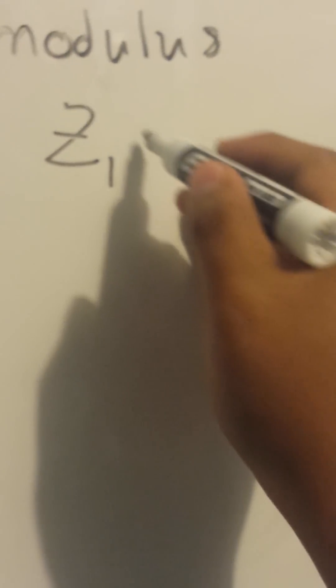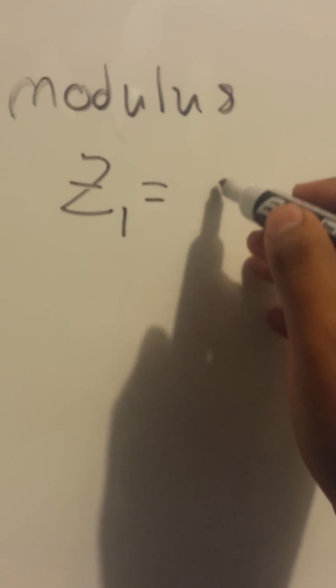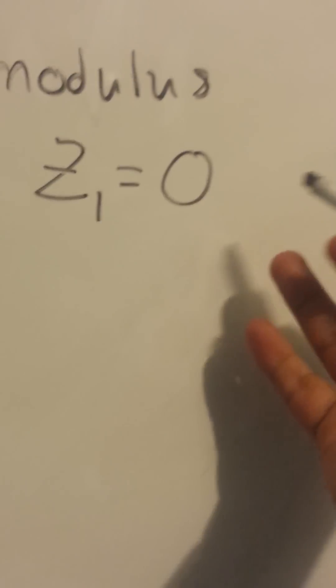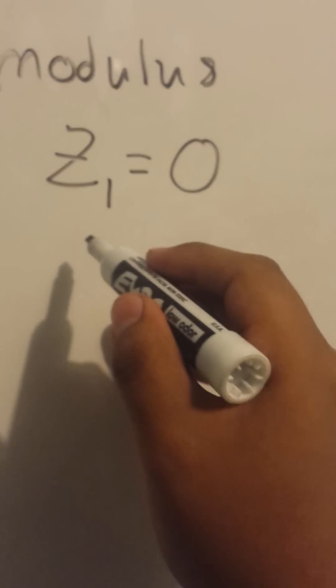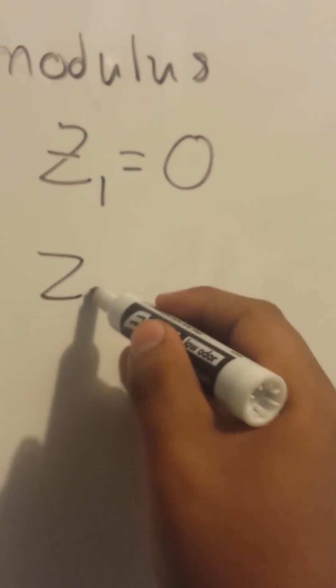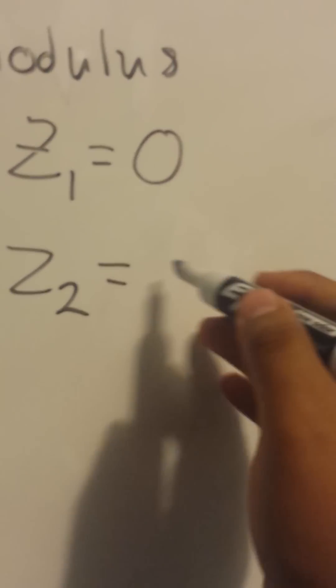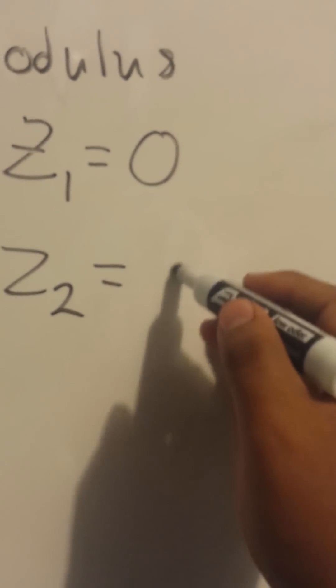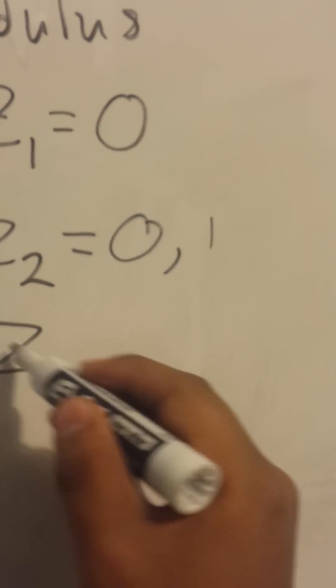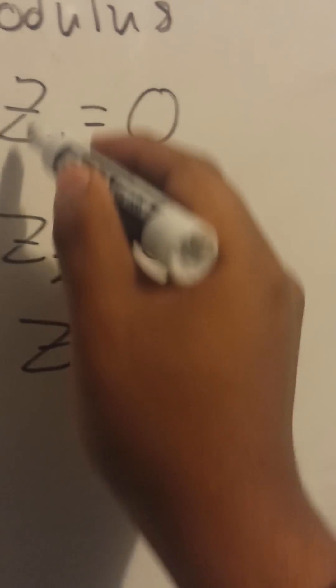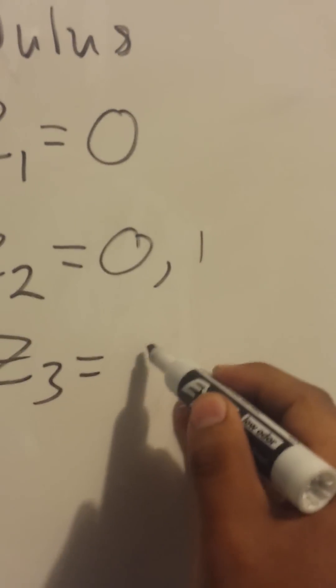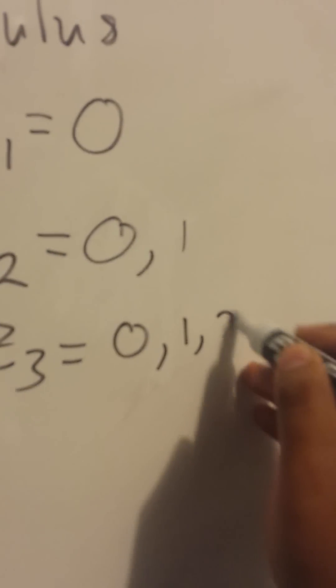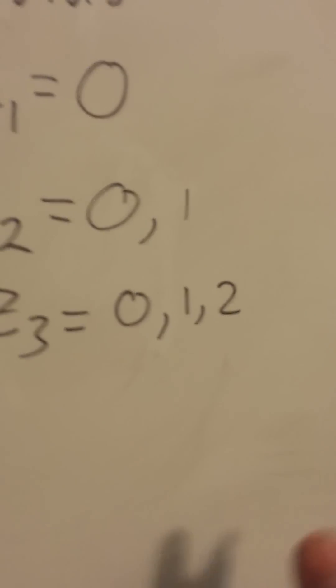So if we choose mod 1, the only number that exists in mod 1 is 0, which isn't very helpful. In mod 2, the only numbers are 0 and 1. In mod 3, the only numbers that exist are 0, 1, and 2.